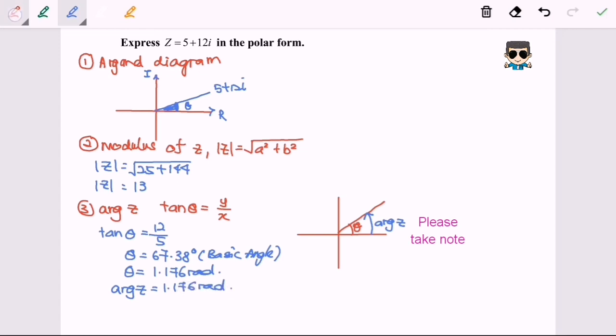So finally, step number four, polar form. So z in the Cartesian form, 5 plus 12i.